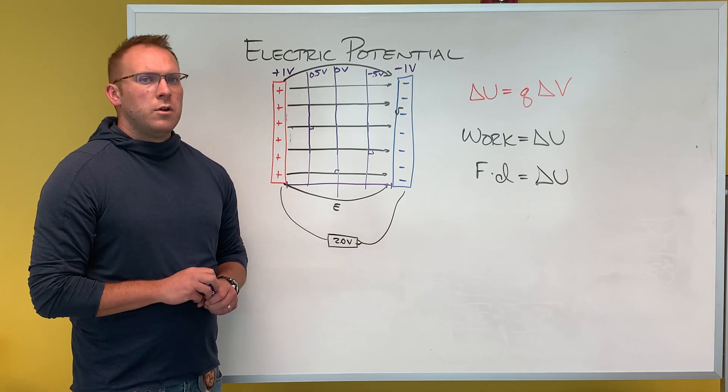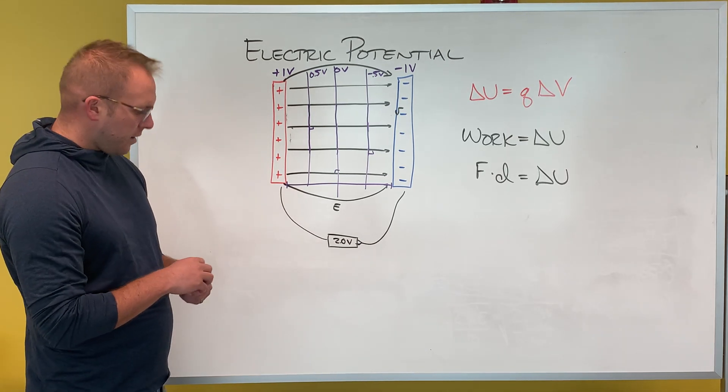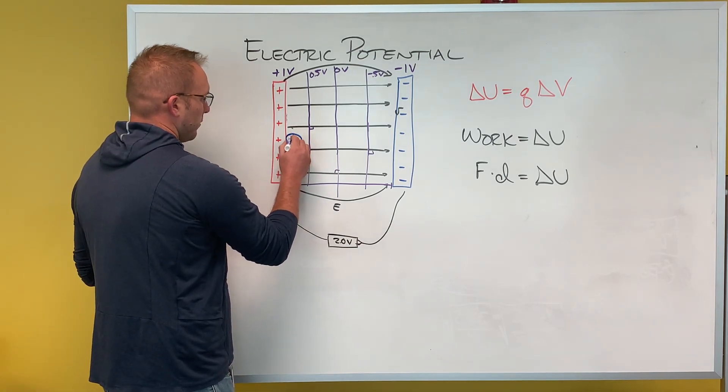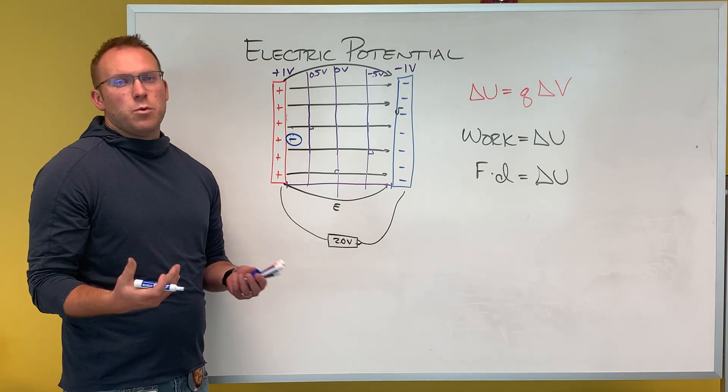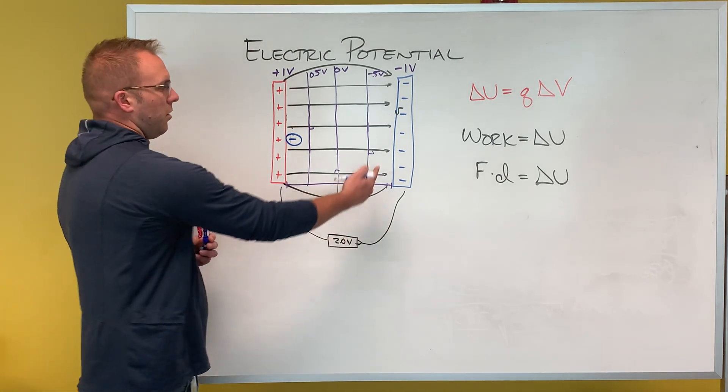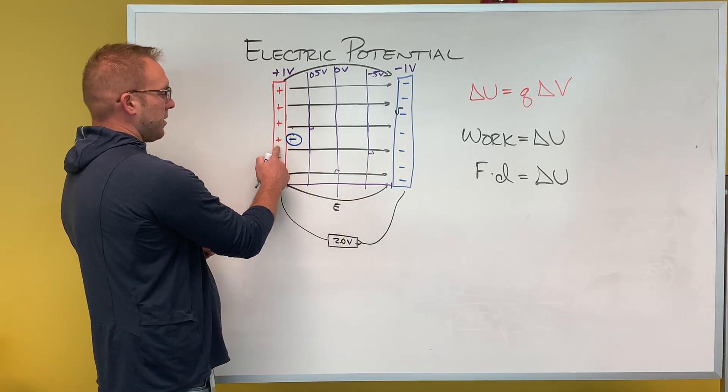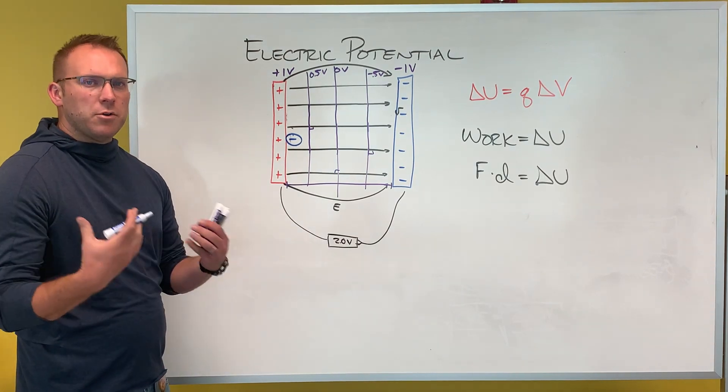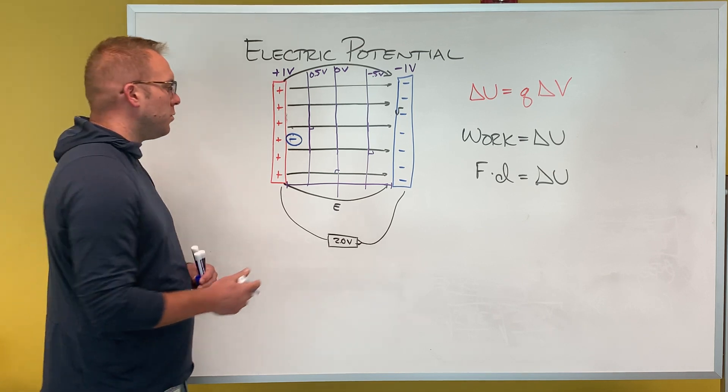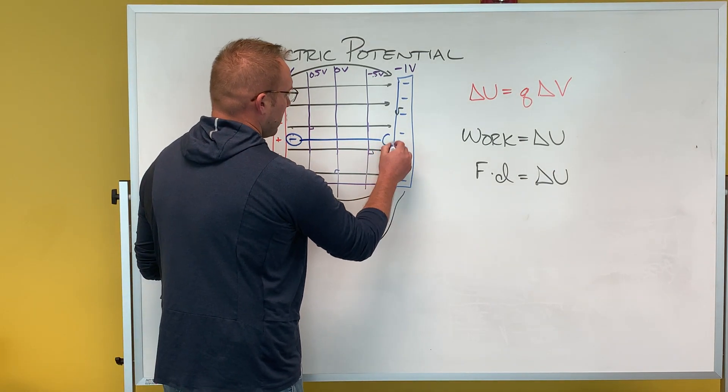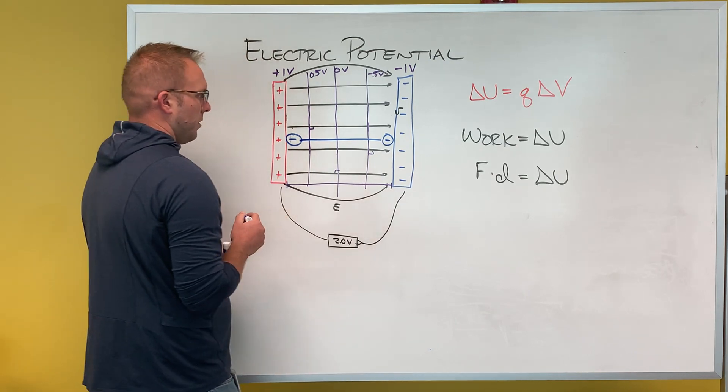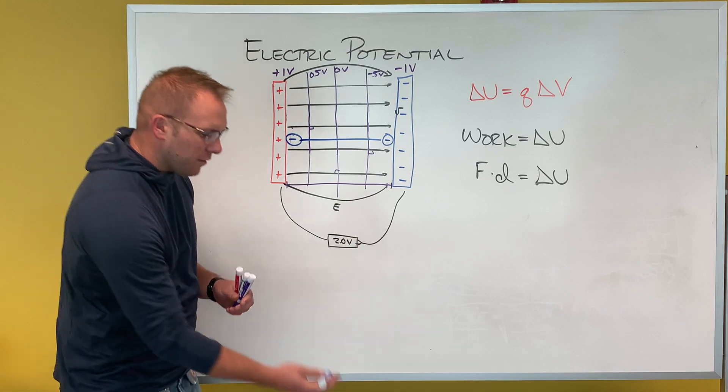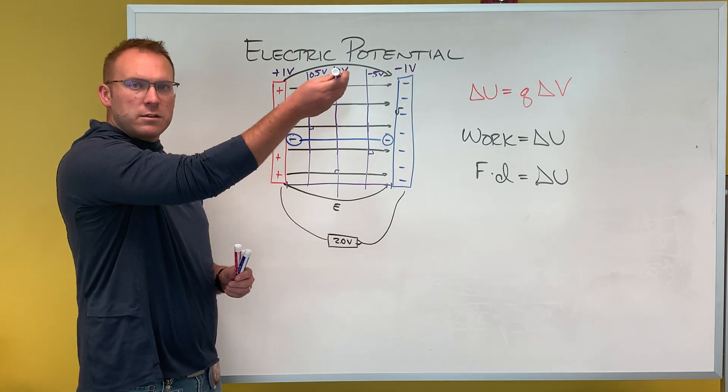Another example that you might use with this is if we had a negative charge that we started here, that negative charge isn't going to move anywhere. It's already where it wants to be. It's repelled from this negative side and it's attracted to this positive side. So what a question might ask is how much work, how much effort, how much energy do we have to use in order to get that negative charge back to here? If I wanted to move it against what it naturally wanted to do, if I wanted to lift something up, how much work would I need to do that?